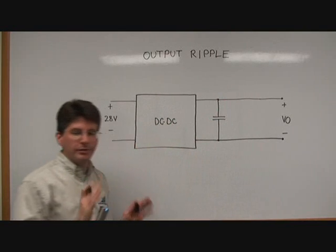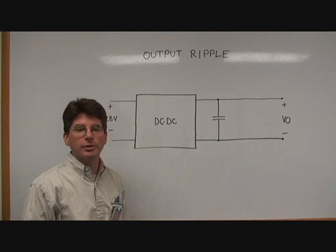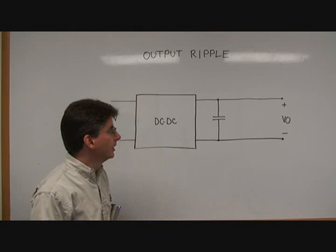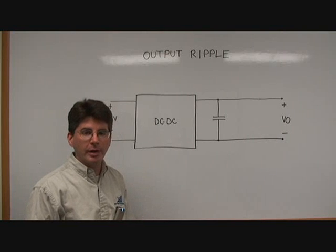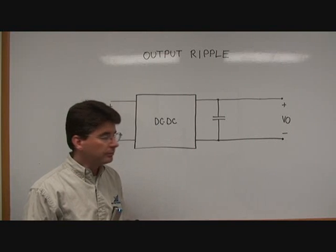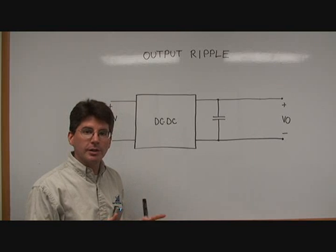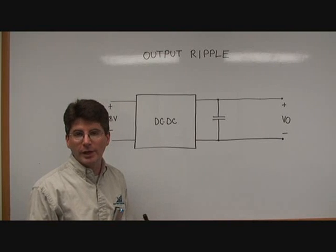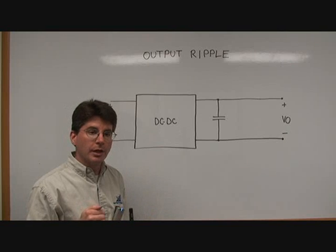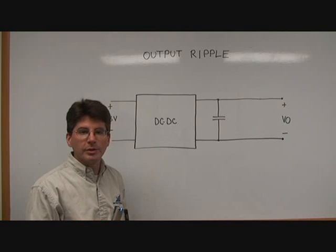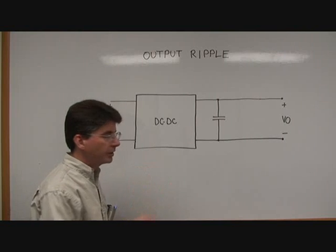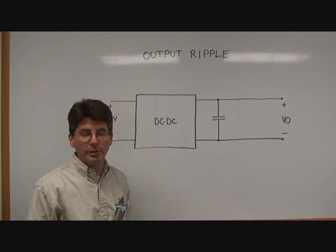This is by far the simplest way to reduce output ripple and output noise and it is the most effective. Use a low ESR ceramic output capacitor. In fact we would recommend a small capacitor, one microfarad to ten microfarads for any application. For ultra low ripple requirements you might push that as far as a hundred microfarads. And this can get your ripple down into the 10 millivolts peak to peak range.